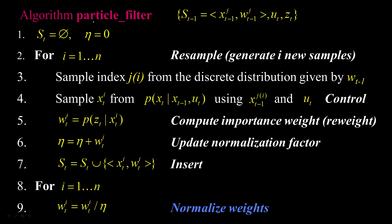We do the following N times, where N is the number of particles that we need. The first thing we do is sample a particle from the previous distribution — that's from this distribution here — according to its weight.